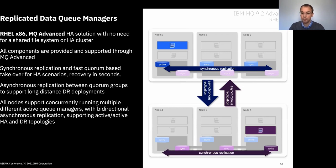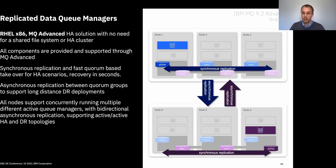All that's required is that the queue manager needs to restart and go through startup processing and then it's open for business. You can configure an IP address to float with that queue manager so applications still use the same logical endpoint irrespective of which node it's running on. You can also pair that with a second high availability group at a second location for disaster recovery, with asynchronous replication between the two groups — giving you high availability within sites and failover to a second site if needed.